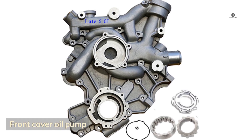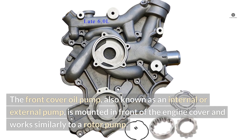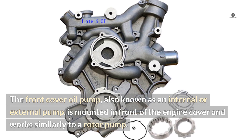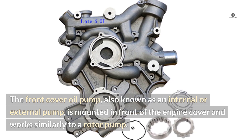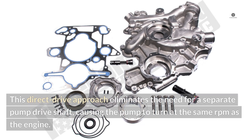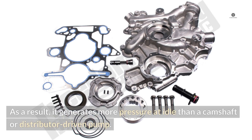Front cover oil pump. The front cover oil pump, also known as an internal or external pump, is mounted in front of the engine cover and works similarly to a rotor pump. It uses an inner drive gear and an outer rotor, with the inner drive mounted directly on the crankshaft. This direct drive approach eliminates the need for a separate pump drive shaft, causing the pump to turn at the same RPM as the engine. As a result, it generates more pressure at idle than a camshaft or distributor driven pump.